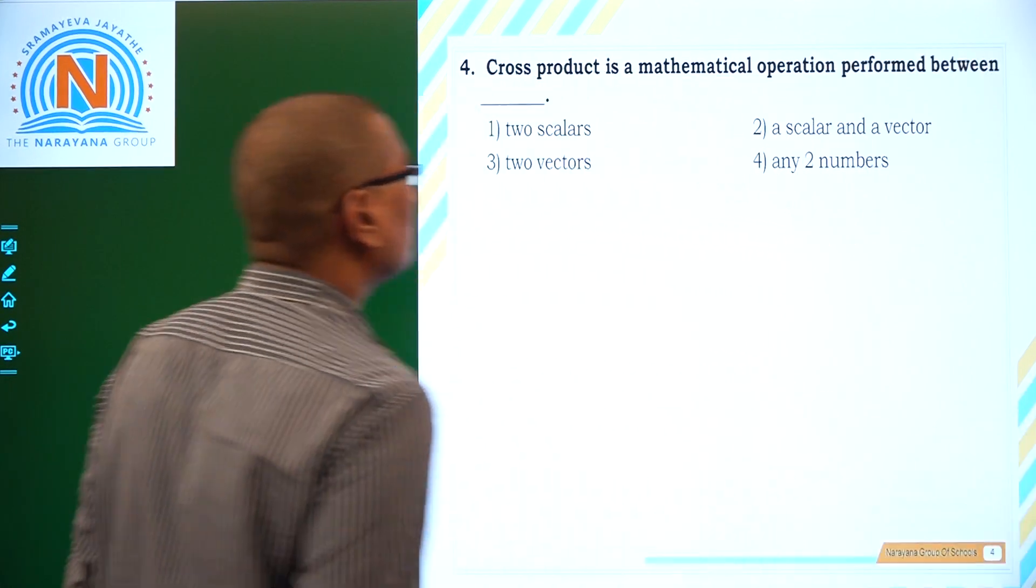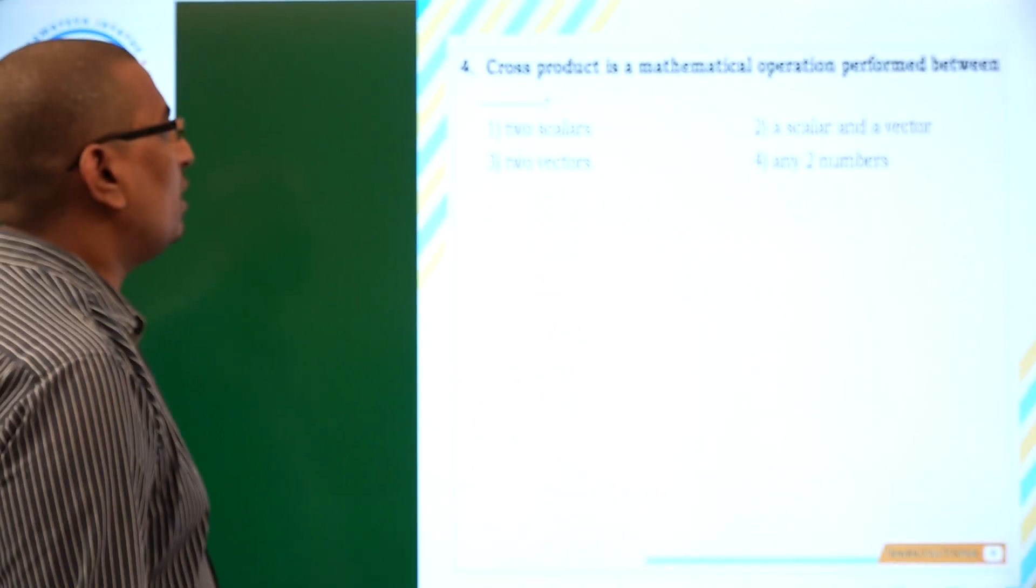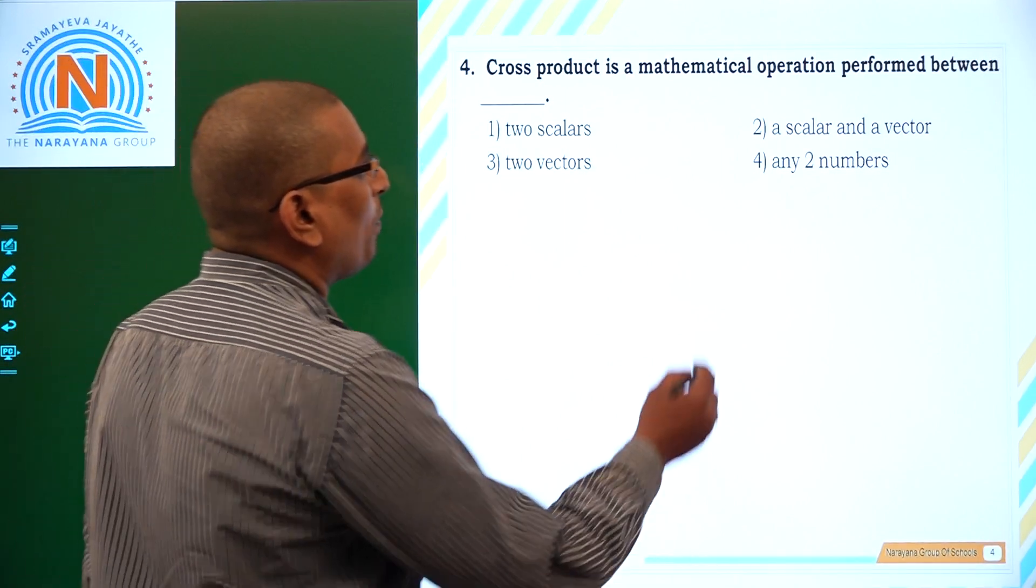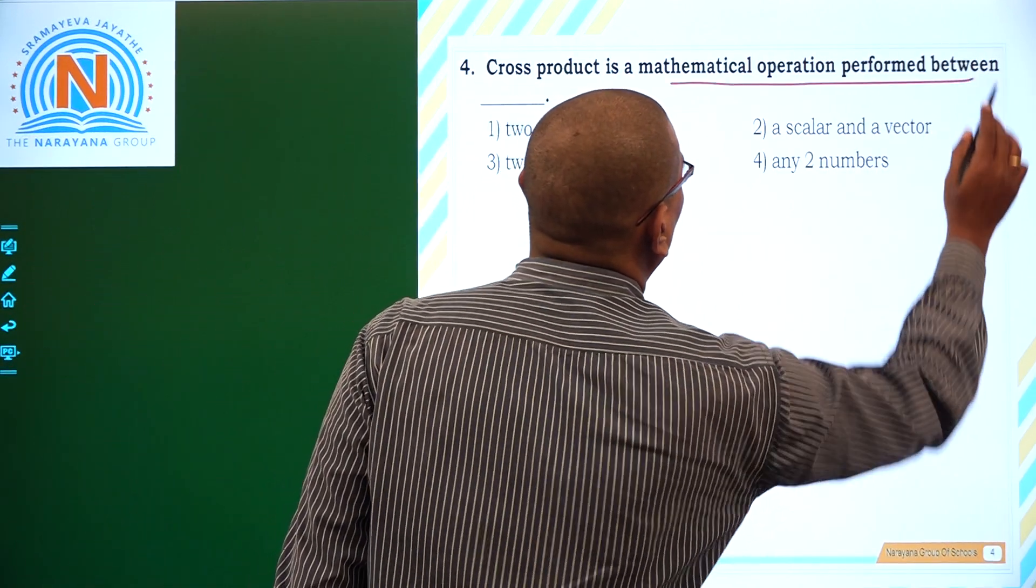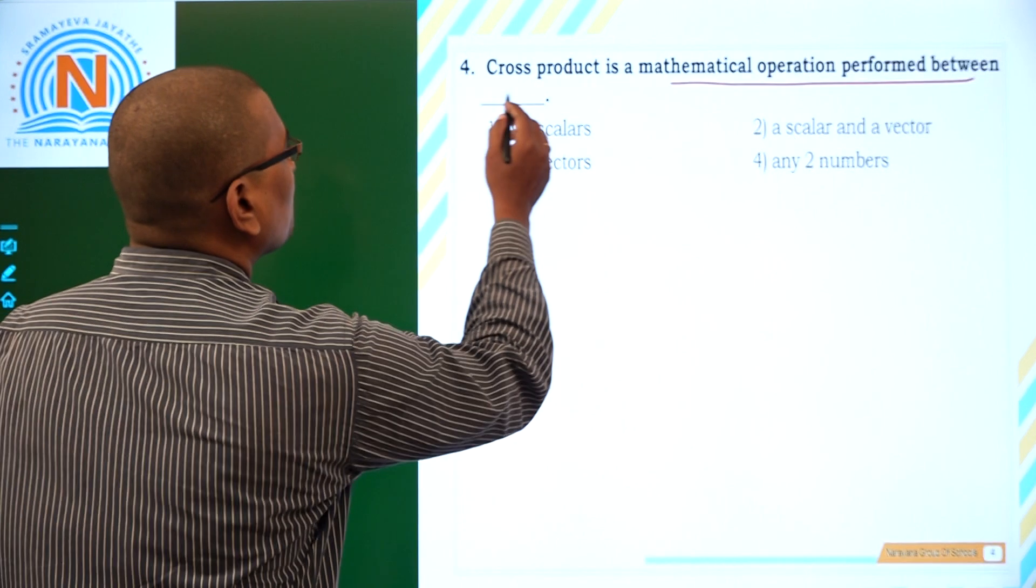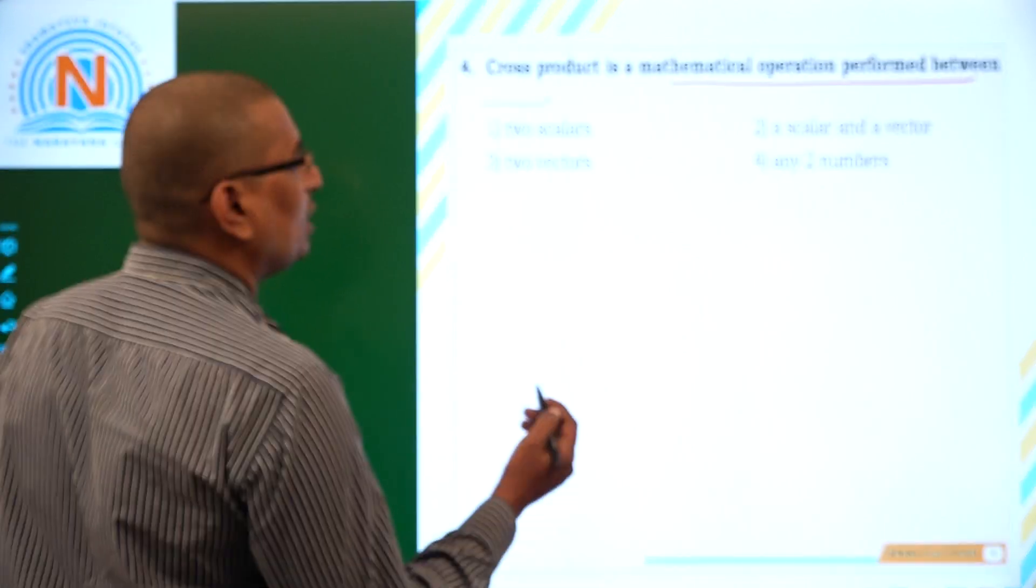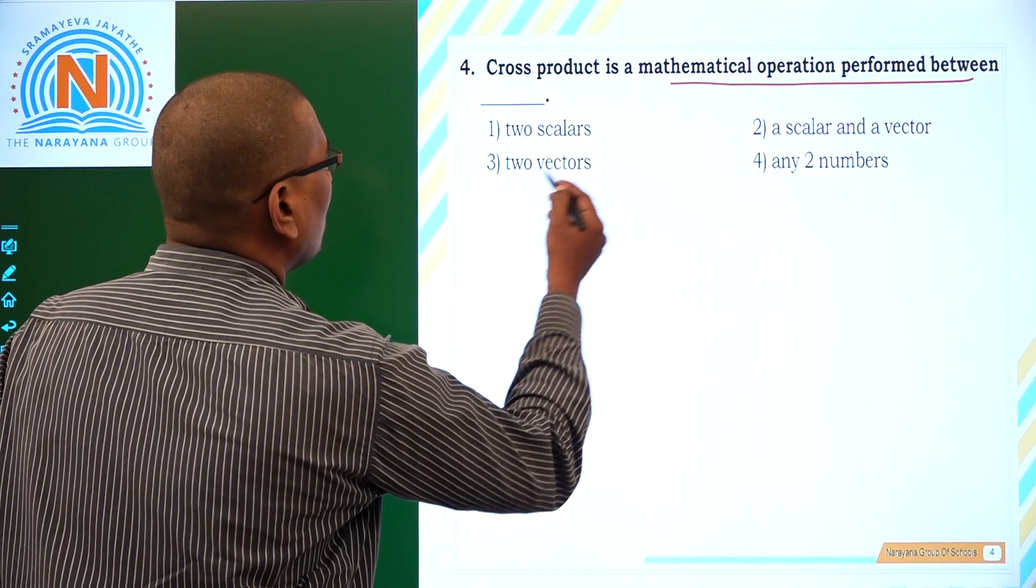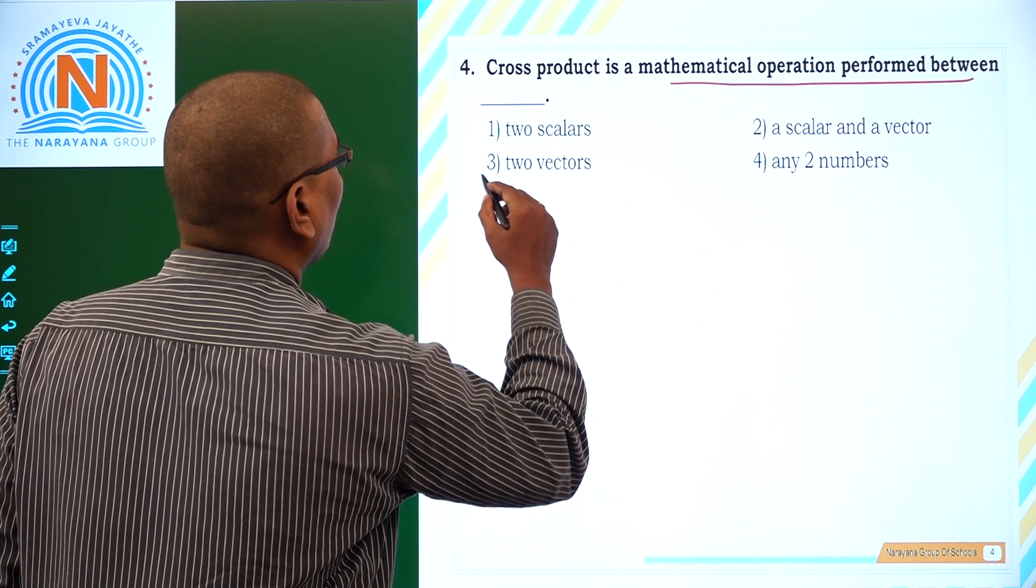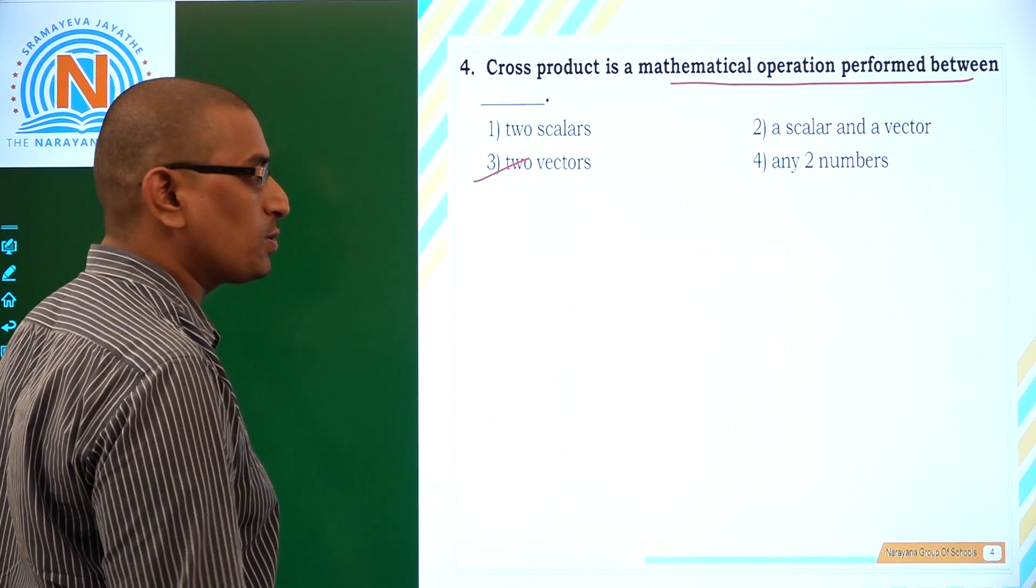The cross product is a mathematical operation performed between. So cross product is generally multiplication of two vectors. So it is a mathematical operation between two vectors. It is option number 3.